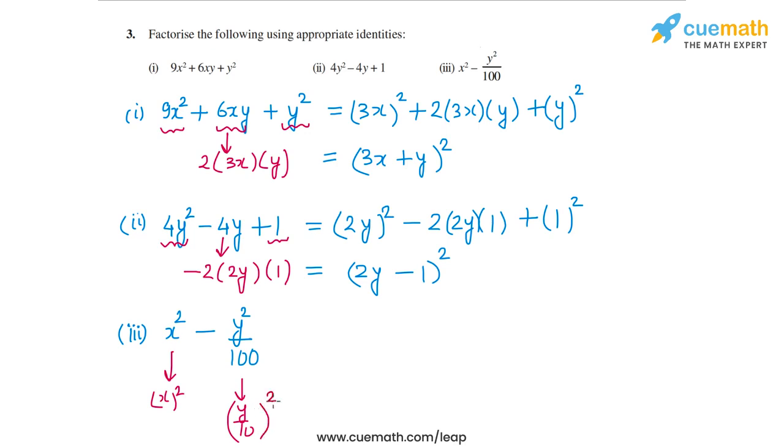So this expression is of the form a square minus b square, where a is x and b is y by 10. So this is how I can write this expression.